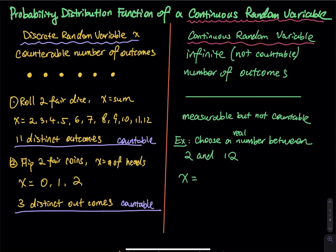I would like to talk about probability distribution of a continuous random variable. Speaking of continuous random variable, let's take a look at a discrete random variable first, because we discussed that in the previous lesson. Let's bring it back right now and then we can make a comparison between discrete and continuous.